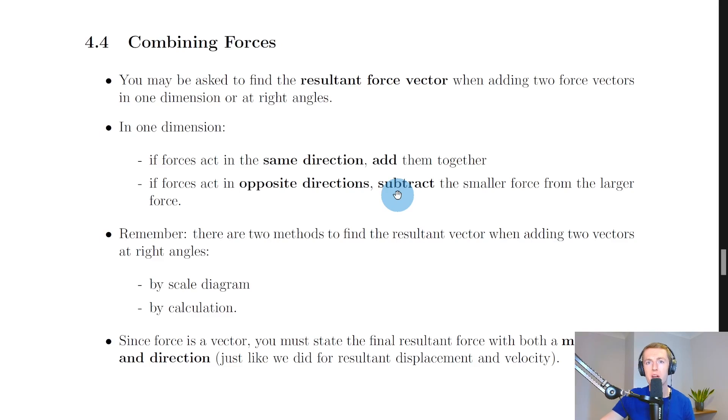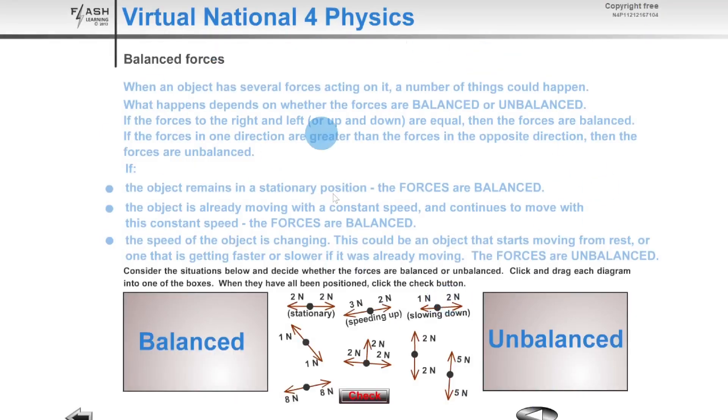If you ignore all this text and just look at the boxes down the bottom, we've got a little exercise we can do. We've got two boxes: balanced and unbalanced. And we're going to decide which box these things should go in. For this object we've got two newtons to the left, two newtons to the right.